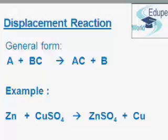In this reaction zinc is displacing Cu²⁺ ions from an aqueous solution of copper sulphate, that is CuSO₄. The red precipitate formed is of the displaced copper. This displacement reaction takes place because zinc is more reactive than copper.